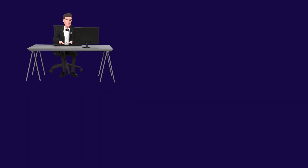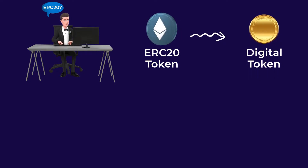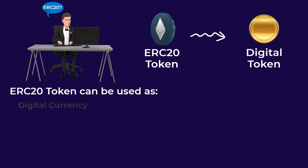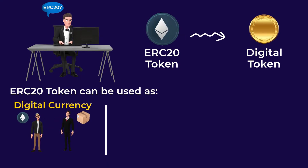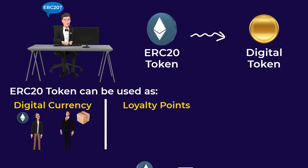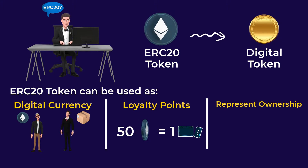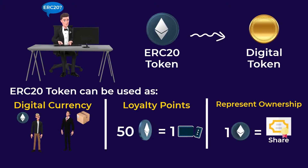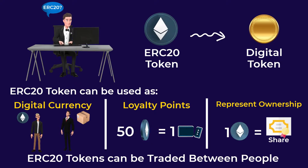If you have been looking into some cryptos lately, you probably have heard about ERC-20 tokens. An ERC-20 token is a digital token that has some value or a function. It can function as a currency that people use to make purchases. ERC-20 tokens can also be used as loyalty points for an online platform, like travel agencies, or they can represent ownership of shares in a company. Most importantly, they can be traded between people like any other cryptocurrency.